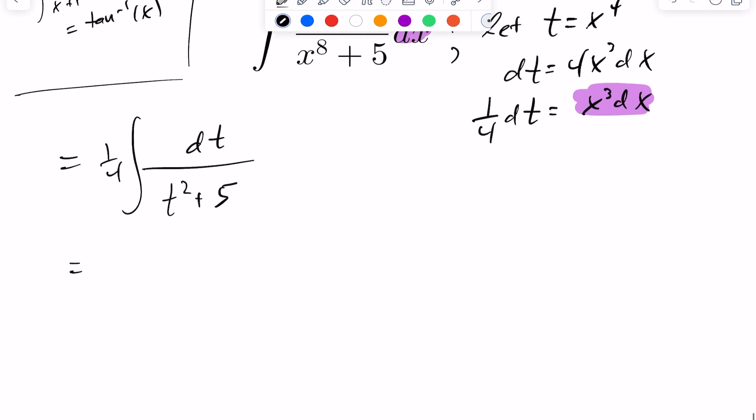So I'm going to go ahead and I'm going to factor a 5 out of the denominator. Pulling that 5 out, you're going to get 1 over 20, the integral of dt over t squared over 5 plus 1.